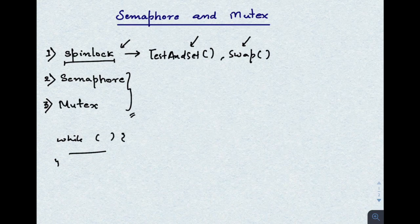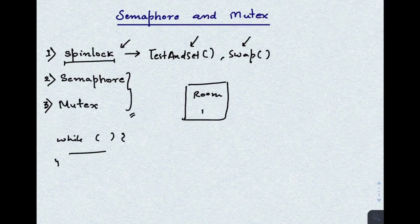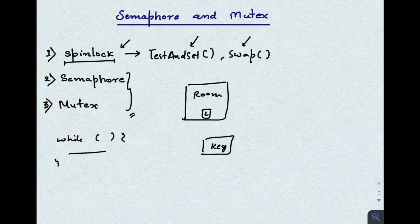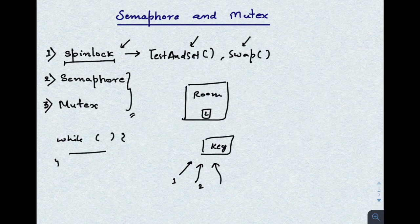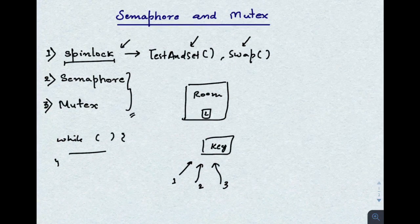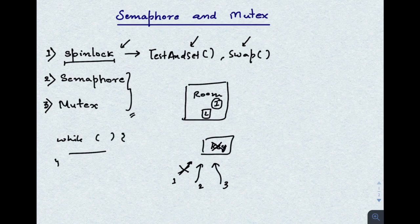So you have a room, and there is a box in which the key of this room is kept. Multiple persons want to access this room. In sequence, the first person arrives, checks the box, finds the key, takes it, opens the lock, and goes inside. This is the spin lock case — when the second person comes, what they will do is keep waiting here.